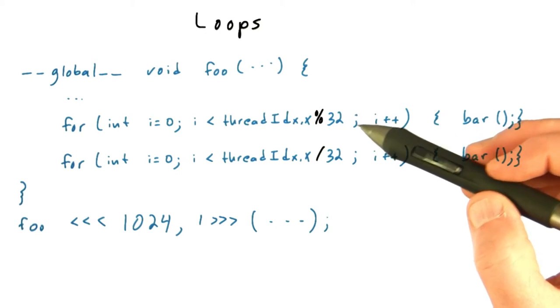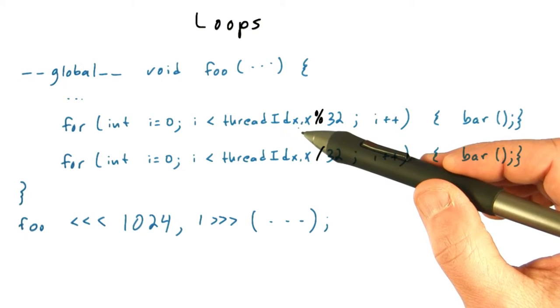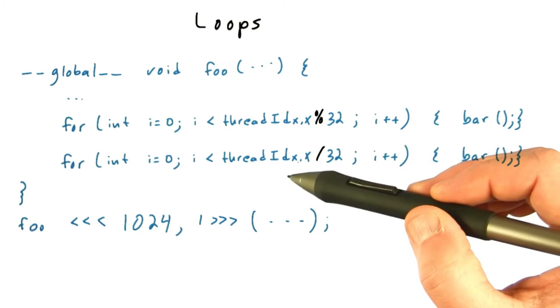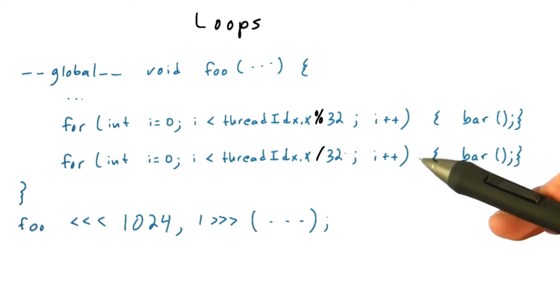And the only difference between these loops is that in this case we repeat a number of times which is thread index dot x mod 32, and here we repeat a number of times which is thread index divided by 32, integer divide.